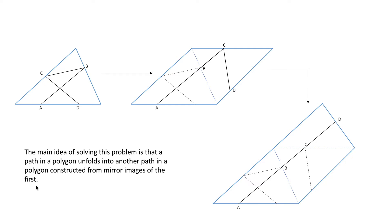For example, say we start with a path in this triangle. If we take the mirror image of it along this side, the path inside it from B to D will unfold into a new path inside the parallelogram formed by the reflection. Again, if we reflect this triangle along this side, the path from C to D will unfold into another path in the new polygon. And if you fold back this polygon into the original triangle, you'll get the original path back.